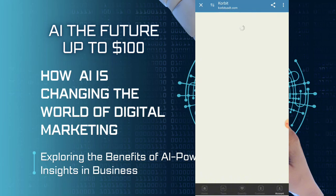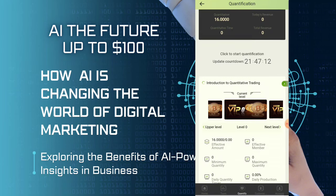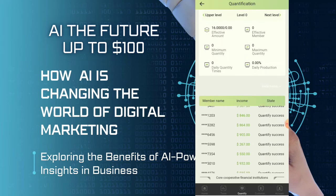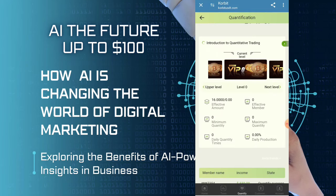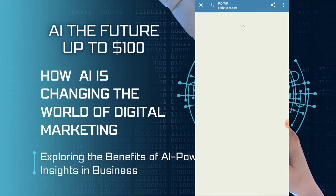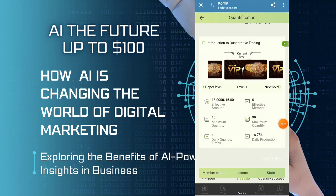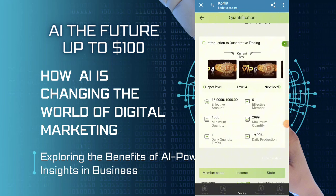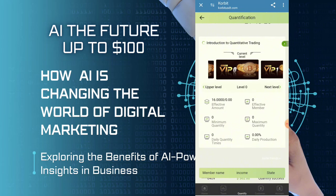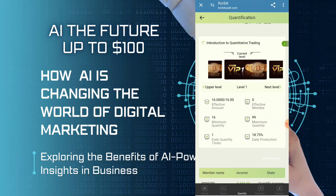Now I will show you how you can earn profit. The quantitative earning plans are present here. VIP 1 can provide you a lot of profit. According to your VIP level, you can earn a huge amount of profit. Up to 10 VIP levels are present here, and every VIP level provides you a higher amount of money.